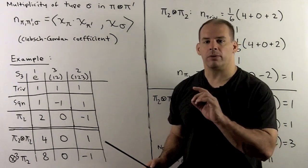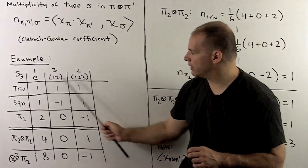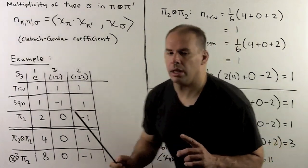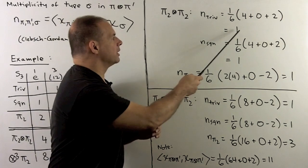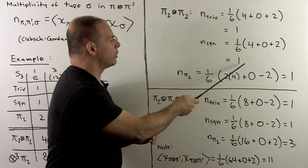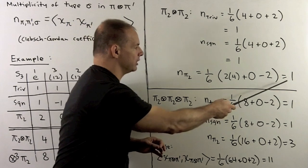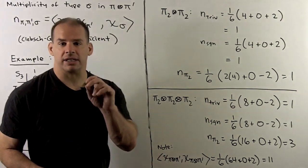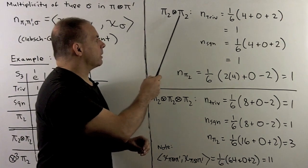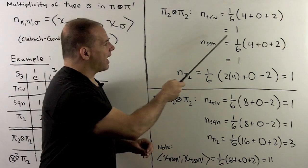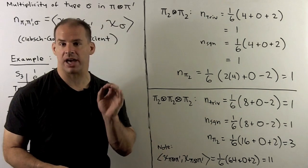If we're looking for multiplicities, I just take the inner product of this row with each of the irreducibles. The trivial type occurs with multiplicity 1, the sign type occurs with multiplicity 1, and the irreducible two-dimensional occurs with multiplicity 1. We check dimensions: here we have dimension 2 times 2 is 4, and here we have 1 plus 1 plus 2 is 4, so that checks out.